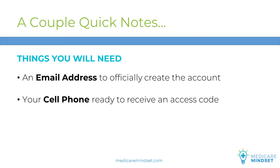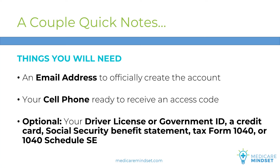You'll also have the option to add more layers of verification to set up your account. This will be through your driver's license or government ID, the last eight digits of a credit card in your name, figures from your Social Security Benefit Statement, Tax Form 1040, or 1040 Schedule SE for self-employed folks. Remember, this part is optional. Going this route adds more complexity and more possibilities for errors and problems. In our example, we will skip this option.